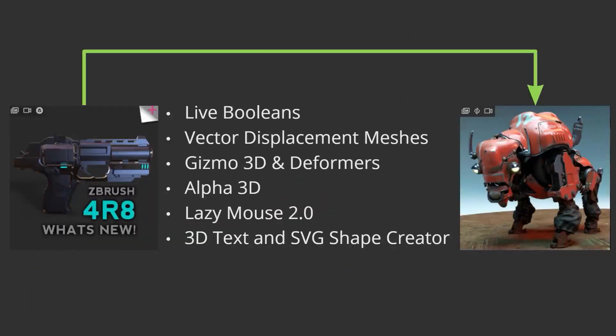For this presentation, I'll take a jaunt down memory lane for releases since 4R8. Starting with 4R8: the big additions were the Gizmo — packed with deformers beyond just geometry transposing — Live Booleans, which are super powerful especially in ZBrush, Vector Displacement Meshes, Alpha 3D, 3D Text, and SVG. Let's hop in for a quick demo.